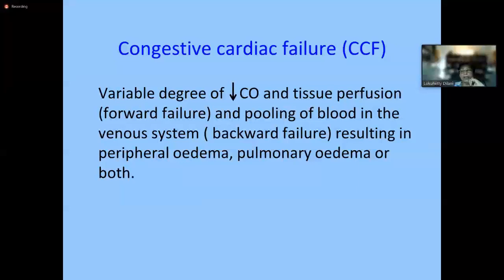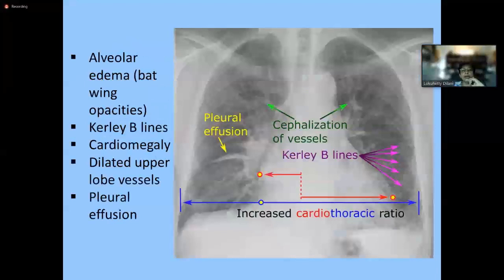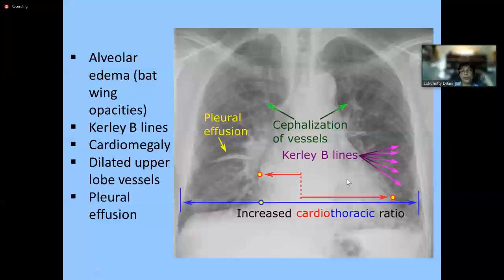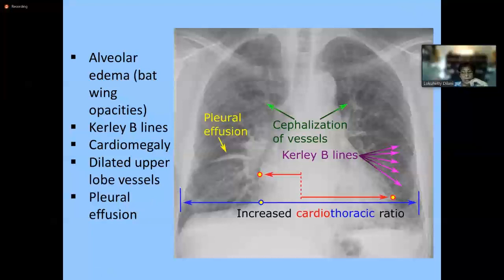On chest X-ray, patients with congestive heart failure show a boot-shaped enlarged heart due to biventricular hypertrophy with a wider diameter and displaced apex beat. X-ray changes include cephalization of vessels, Kerley B lines, and pleural effusions. You should be able to identify heart failure on a chest X-ray, though clinical examination alone should allow you to diagnose that the patient is in failure.